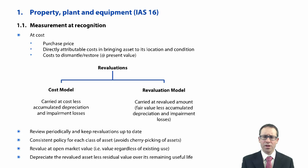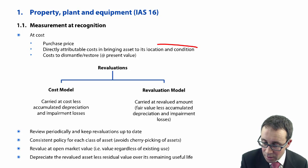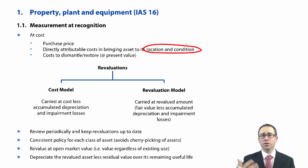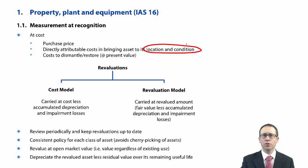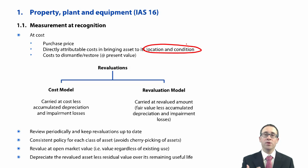In terms of initial recognition, you look at what you've paid and add on the directly attributable costs of getting the asset to its location and condition. That includes any construction or conversion costs, import duties to get the goods into the country, and site preparation and installation fees. Remember, you cannot include the costs of any errors made in the initial assessment of being able to construct that asset.